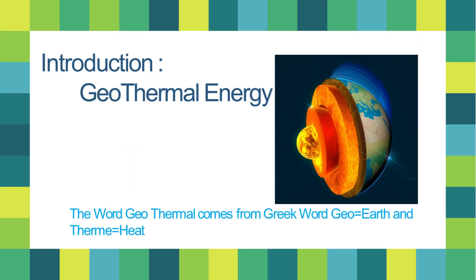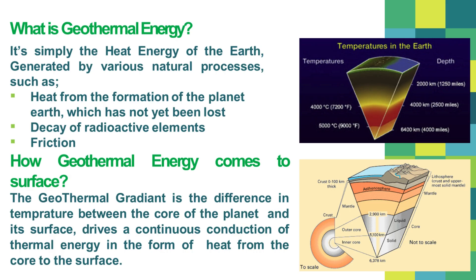Introduction to geothermal energy: the term 'geothermal' is derived from the Greek words 'geo', signifying earth, and 'therm', denoting heat. Geothermal energy is simply the heat energy of the earth, generated by various natural processes such as heat from the formation of the planet earth which has not yet been lost, decay of radioactive elements, and friction. The geothermal gradient is the difference in temperature between the core of the planet and its surface, which drives a continuous conduction of thermal energy in the form of heat from the core to the surface.